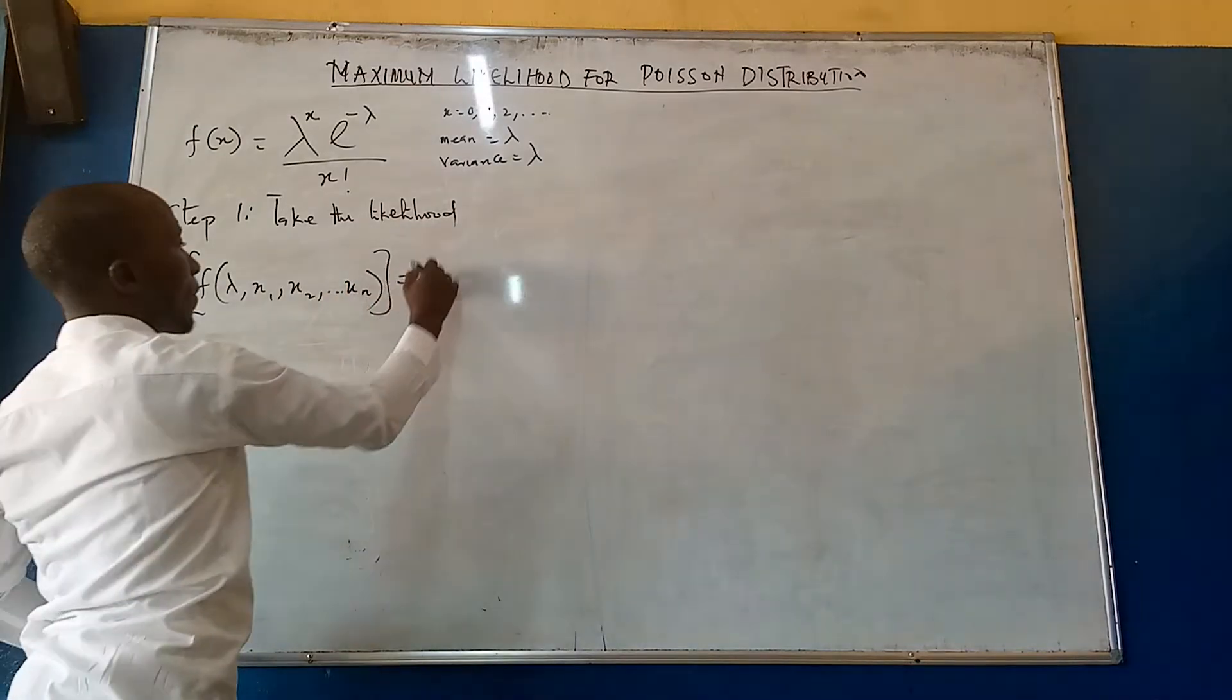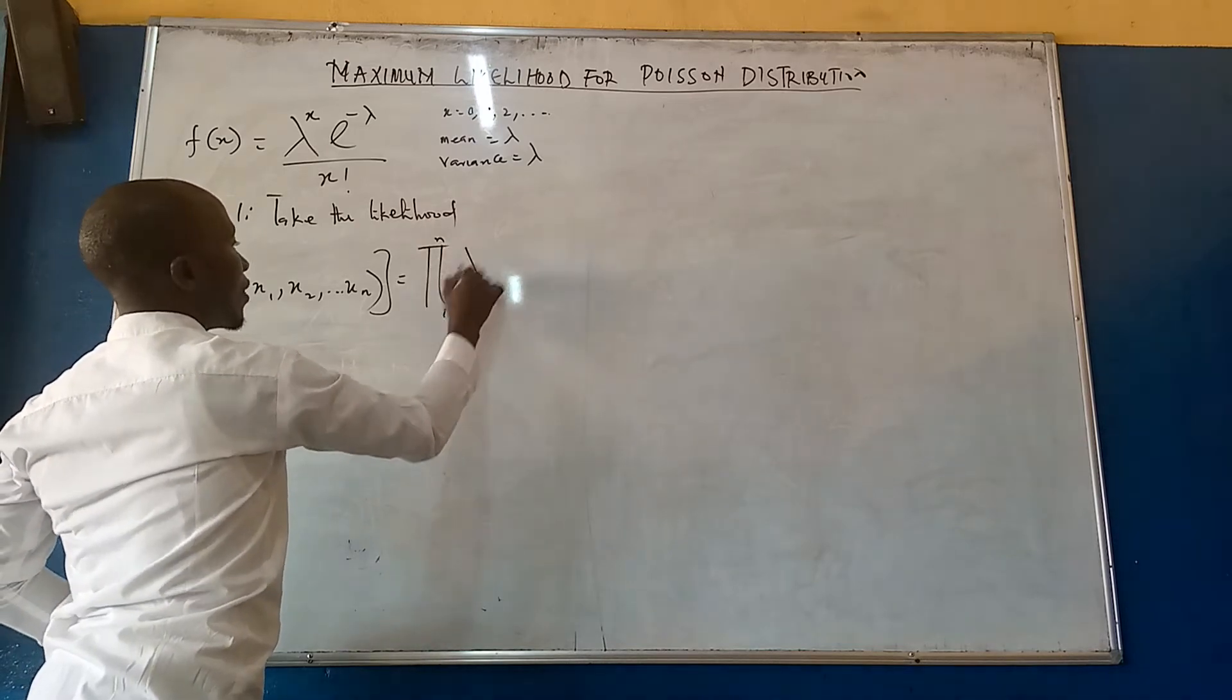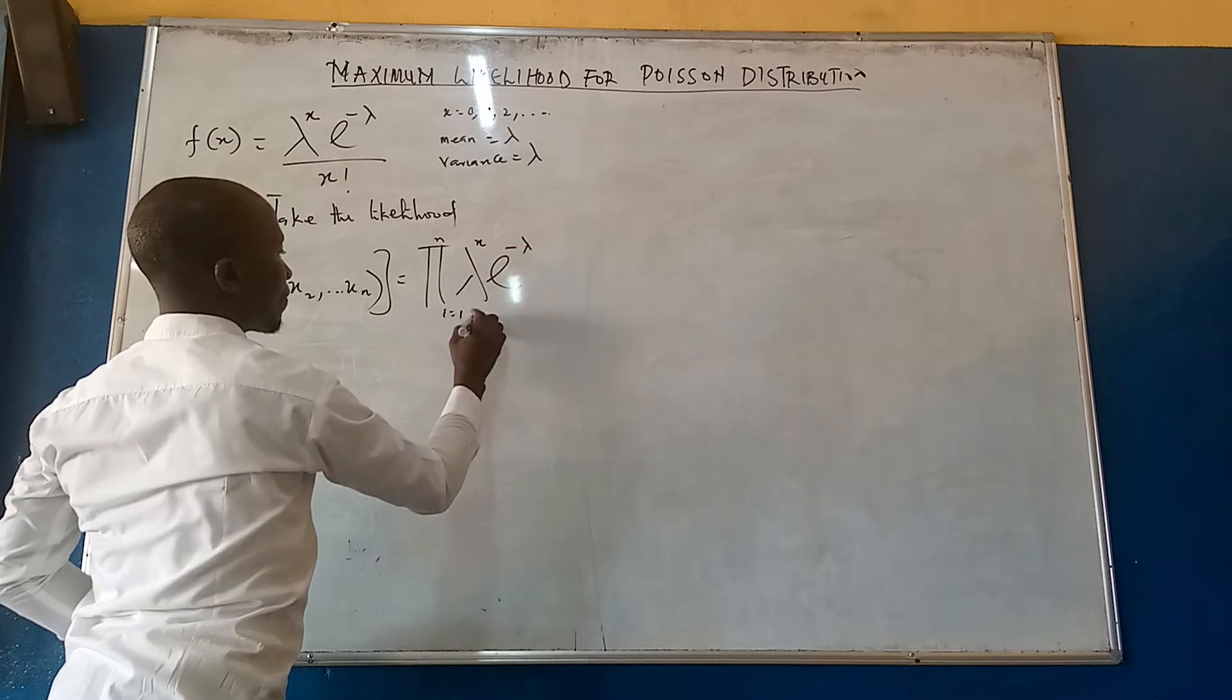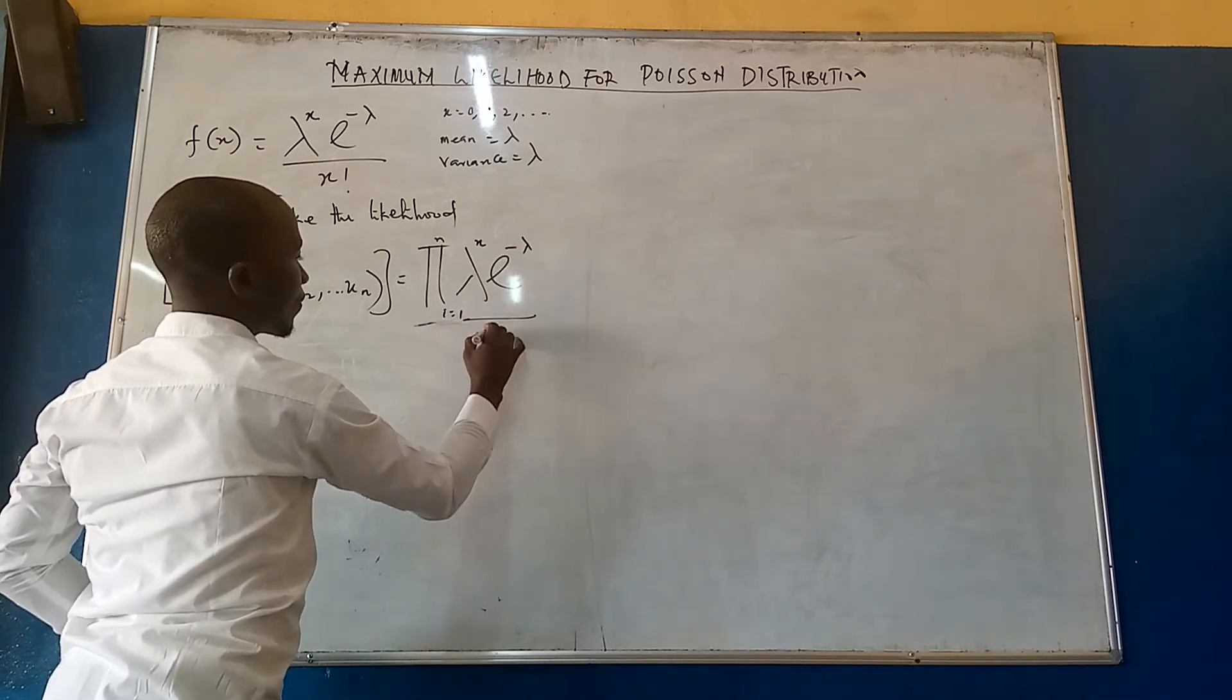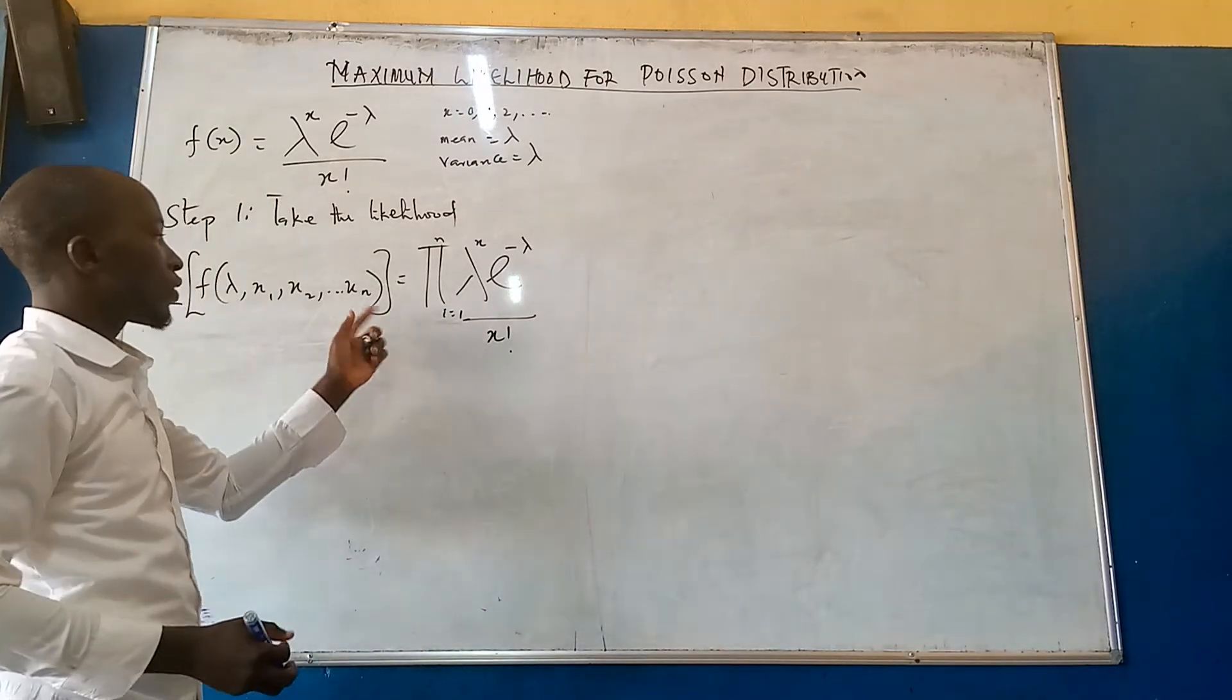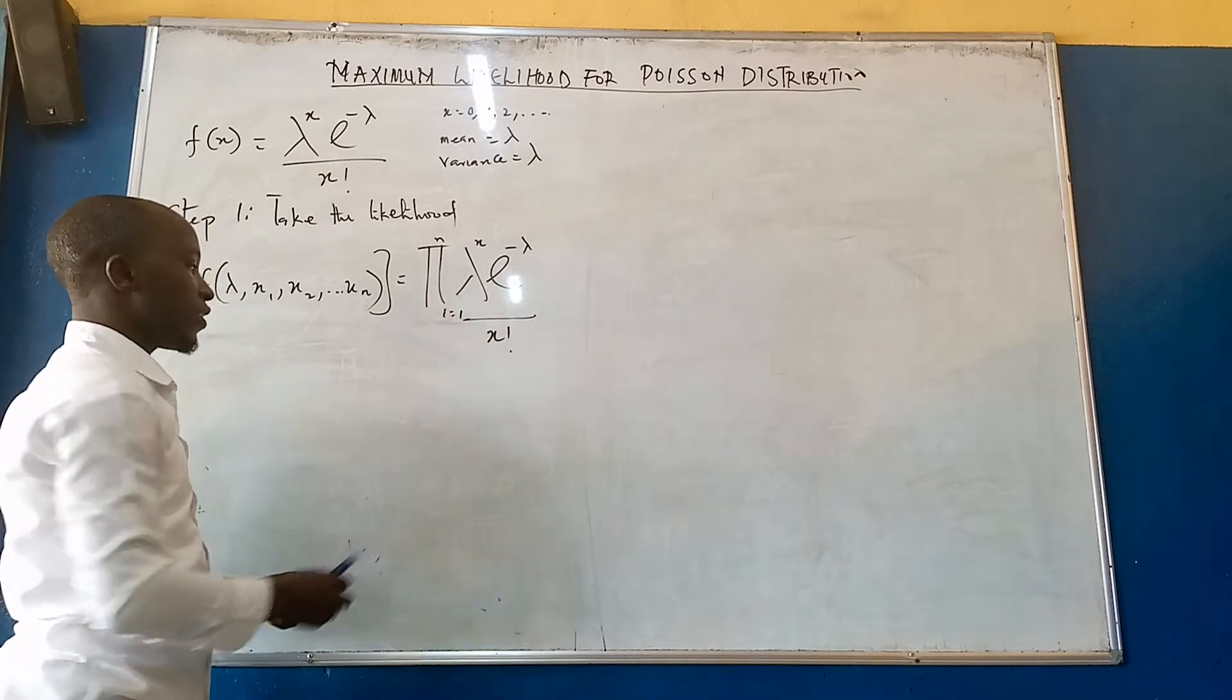we are going to have a value of f of lambda comma x1 comma x2 comma dot dot dot xn equals to product i equals 1 to n lambda raised to x, exponential minus lambda, all divided by x factorial. So this means this is going to affect the whole distribution.